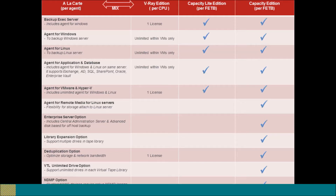The Backup Exec Server license is inclusive of the Agent for Windows license, which means that if you need to backup any files from the local file system, a separate license is not required. The next one is Agent for Windows, required to backup Windows file systems. Agent for Linux is required to backup file systems on Linux servers. Please check the compatibility list for Backup Exec to ensure that the operating system or file system is compatible.